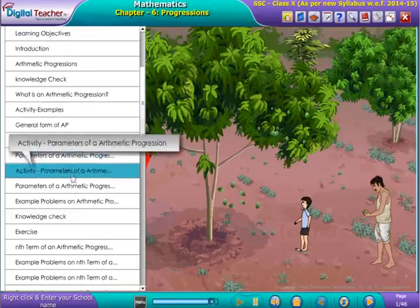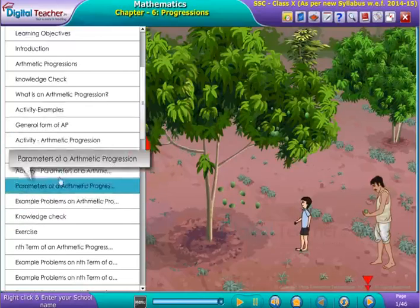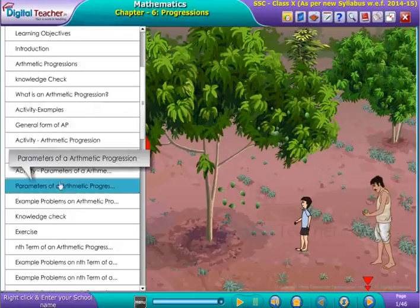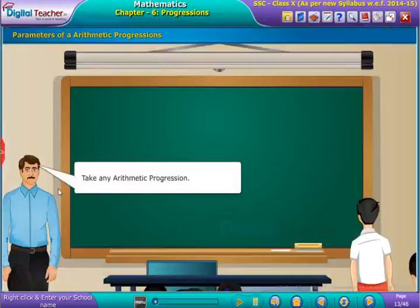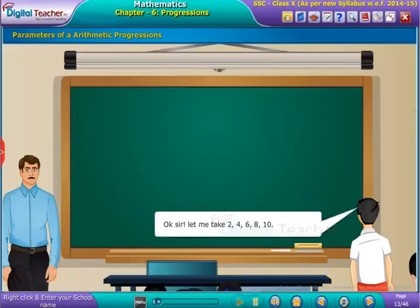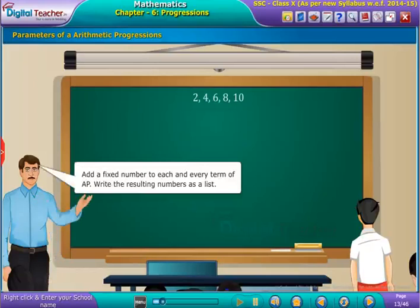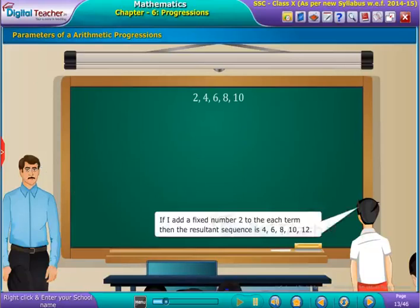Welcome to the chapter Progressions. Take any arithmetic progression. Let me take 2, 4, 6, 8, 10. Add a fixed number to each and every term of AP. Write the resulting numbers as a list.